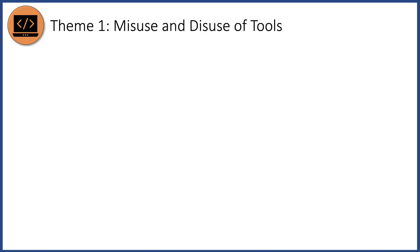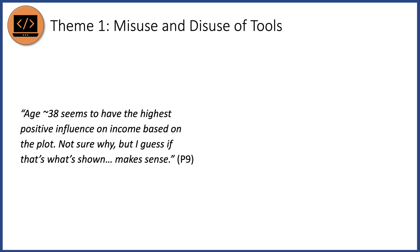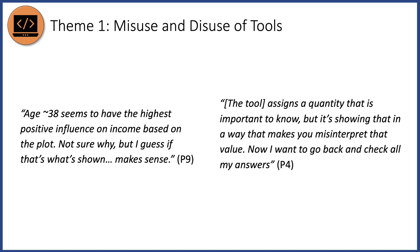The most prominent theme from the contextual inquiry was that there is a lot of misuse and disuse when it comes to these interpretability tools. Participant 9 was confused about why age 38 had the highest positive influence on income, but since the plot showed it, they figured it made sense — this is a case of misuse, overtrusting a tool and using it beyond its capabilities. Participant 4, on the other hand, was skeptical because the tool assigns a quantity that is important to know but shows it in a way that makes you misinterpret that value — this is a case of disuse, where something caused the participant to become suspicious and underuse the tool. Neither case is ideal.